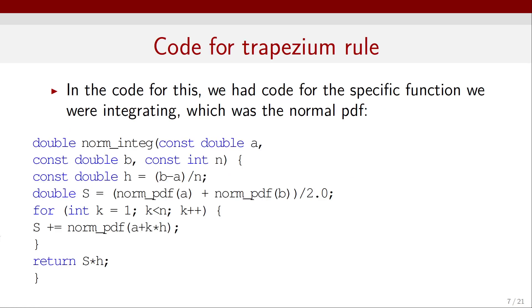So this is code for implementing the composite trapezium rule. Here we have a double function, we call it norm_integral, for example, and the input is the double a and b, the beginning and end of the interval, and the number of steps n, or actually the number of subintervals. Then inside that function we calculate the step size h, which is b minus a over n.